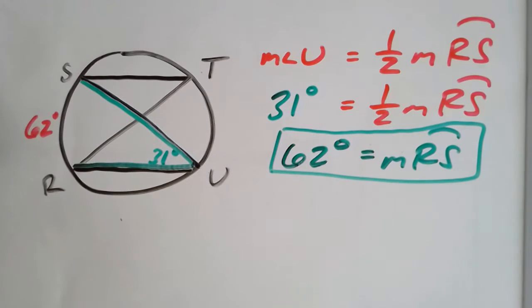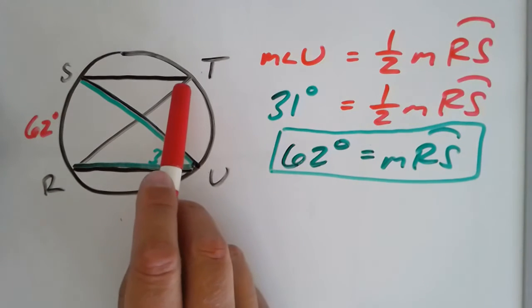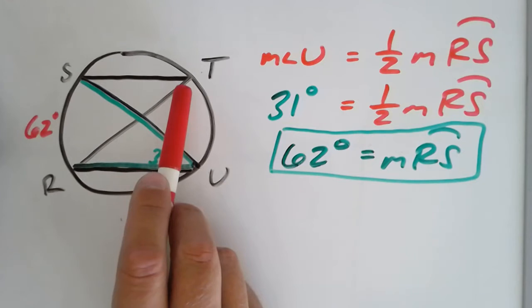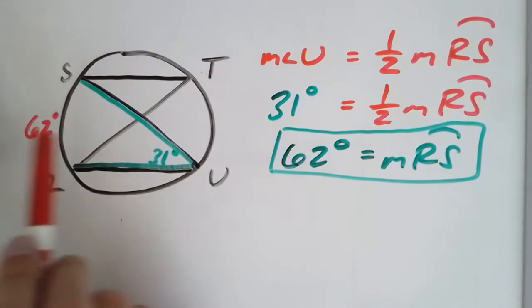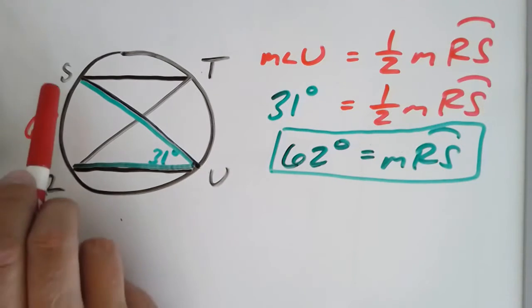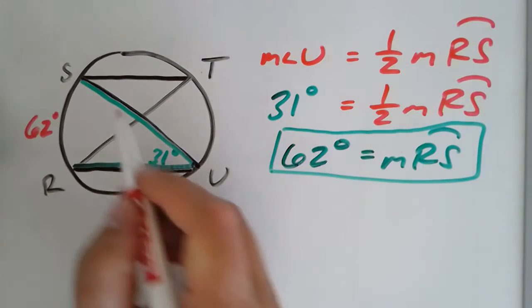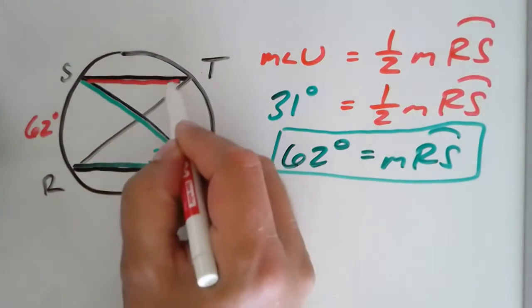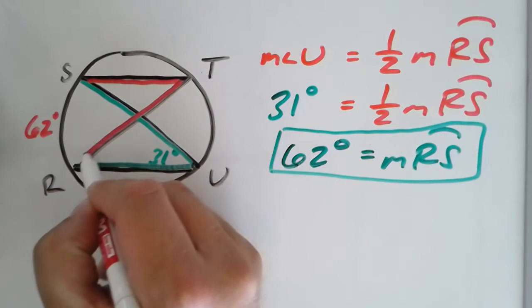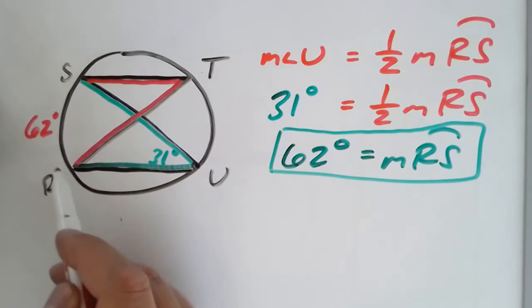The second part of this question asks me to find the measurement of angle STR. Also shorthand could just be angle T. And before I couldn't use intercepted arc because I didn't know the measurement of the arc. But now that I do, I can use that for the fact that angle T, this angle right here, actually has the same exact end points for its angle, S and R.